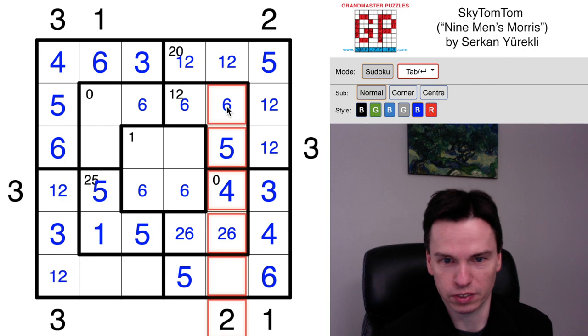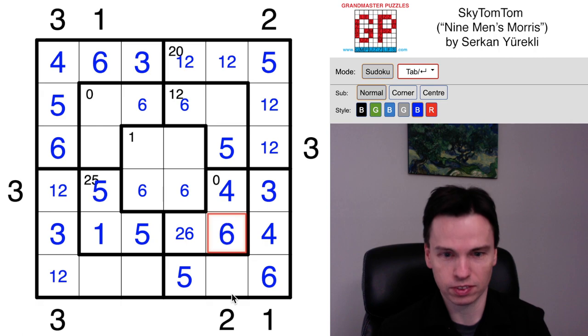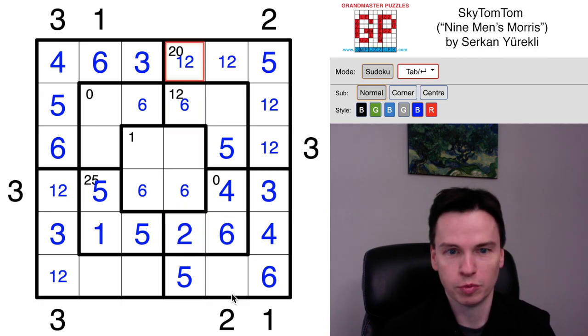This skyscraper clue then is going to be very forcing. If this were the six, you'd see far too many buildings. So this is a six, puts in this two, puts in this one, puts in this two, that gives this one three.